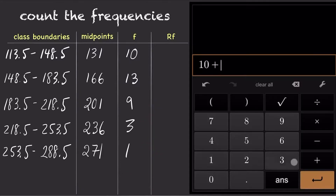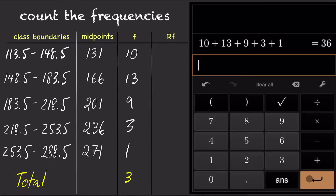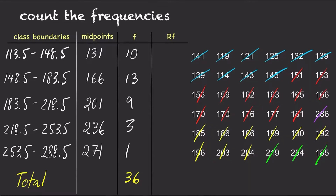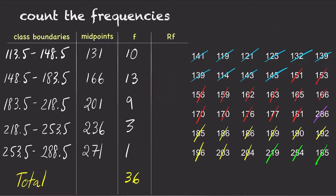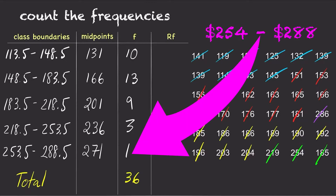Now add up the frequency from each class and the total should be 36 people. From the frequency distribution table, we can see that there were 9 people in their late twenties who paid between $184 and $219 for their health insurance premiums. Likewise, there was one person who paid between $254 and $289.